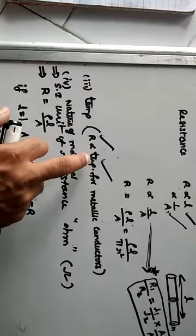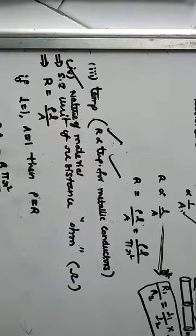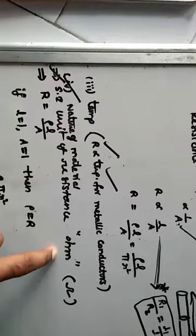Resistance depends upon the nature of material also. For different materials, resistance is different. In the last class I explained what is meant by resistance: the property of opposing flow of DC current is called electric resistance. The SI unit of resistance is the ohm.